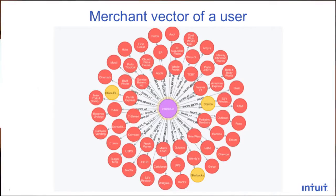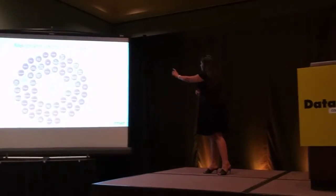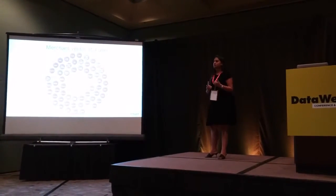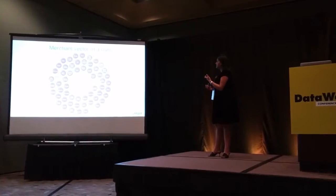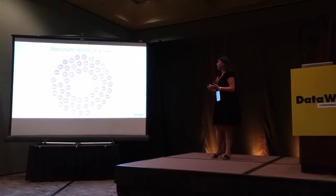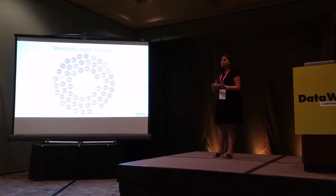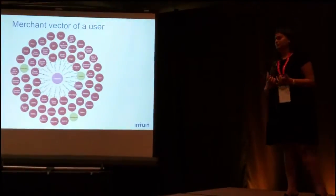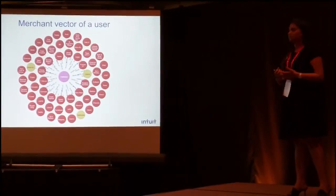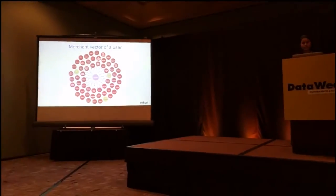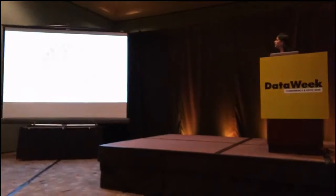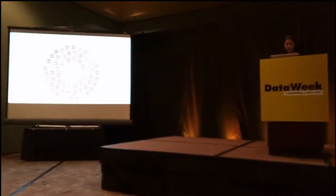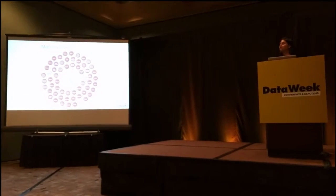The edges between the user node and the merchant nodes represent the 'shops at' relationship. Each edge contains metadata like how frequently the user has visited that merchant and the amount spent at that merchant. Looking at this particular example, this user has a very diverse spending pattern spread across all sorts of categories. Let's look at what we mean by category in the next slide.